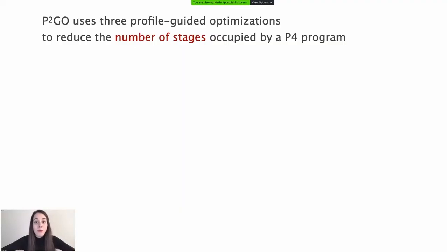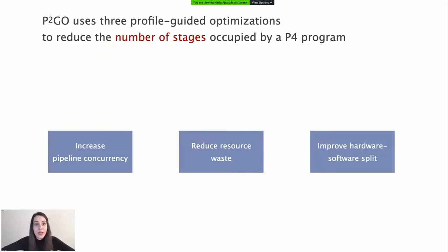P2Go uses three profile-guided optimizations in order to reduce the number of pipeline stages the program uses. The number of pipeline stages is one of the most scarce resources that often prevents programs from compiling. Concretely, P2Go's optimizations aim at increasing the pipeline concurrency, reducing resource waste, and improving the hardware-software split. I'll now walk you through each optimization using a motivating example.